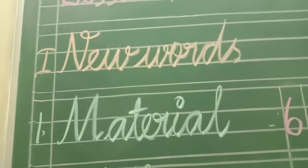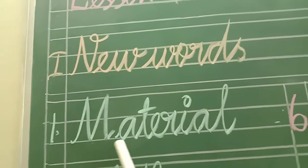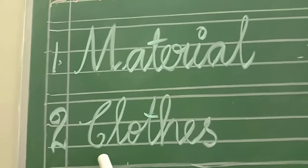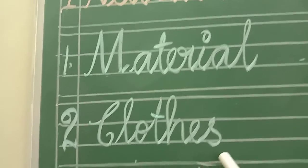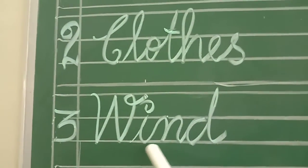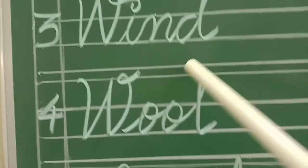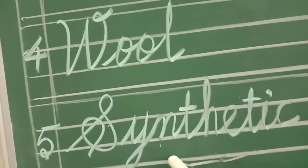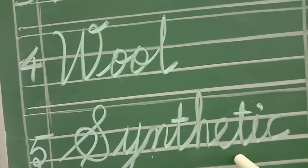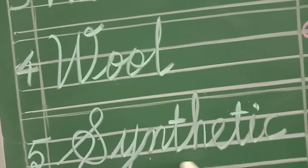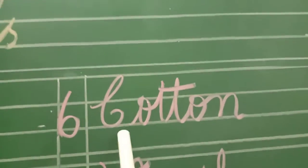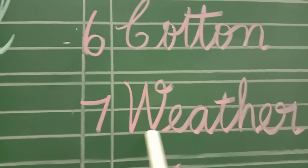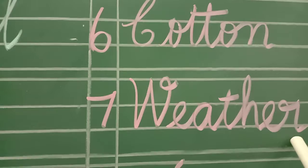Now, words with spelling. Material - M A T E R I A L - material. Clothes - C L O T H E S - clothes. Wind - W I N D - Wind. Wool - W O O L - Wool. Synthetic - S Y N T H E T I C - Synthetic. Cotton - C O T T O N - Cotton. Weather - W E A T H E R - Weather.